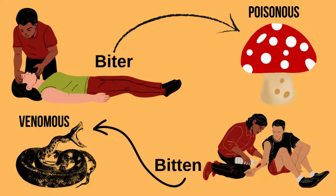The first one is more active, because an animal injects you directly. The second one is more passive, because it only gets into you when you eat, breathe, or touch it.